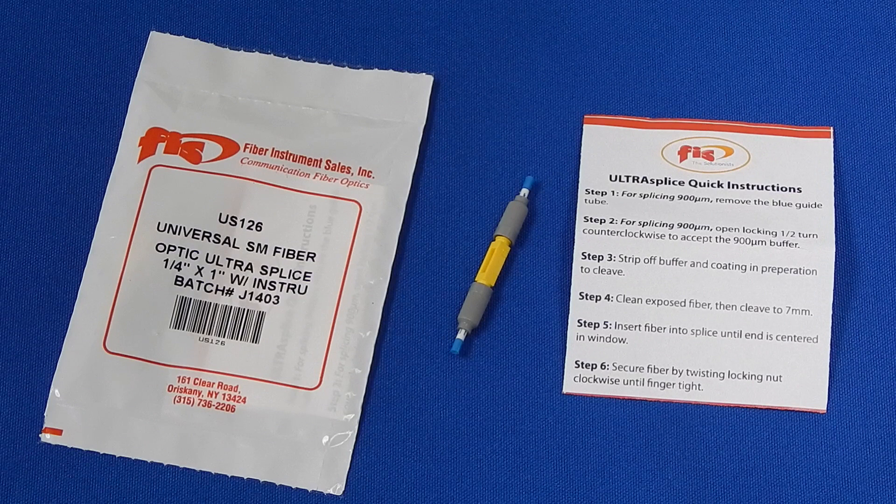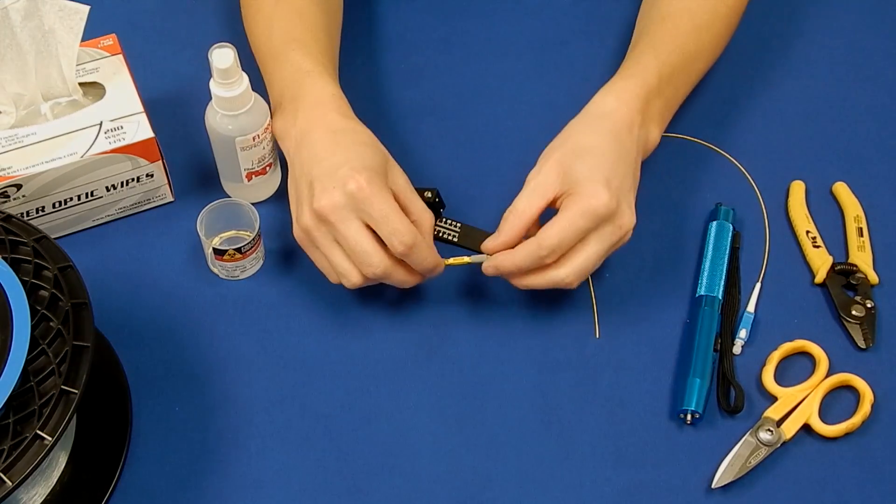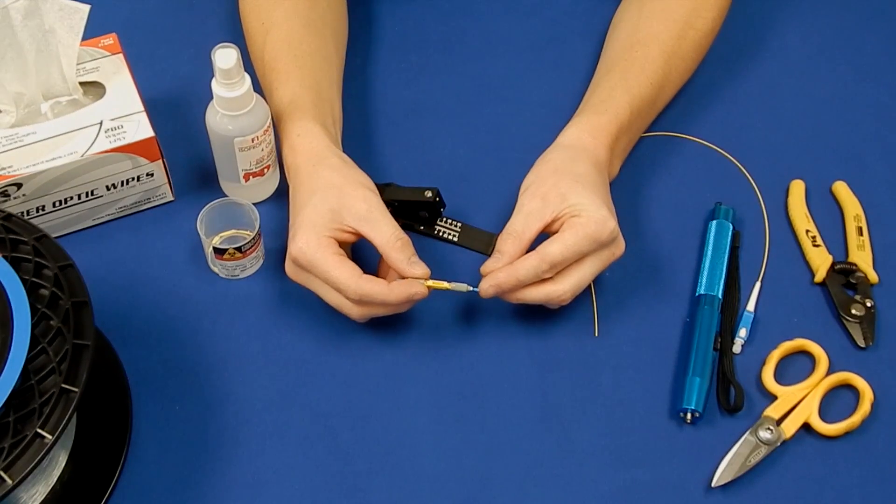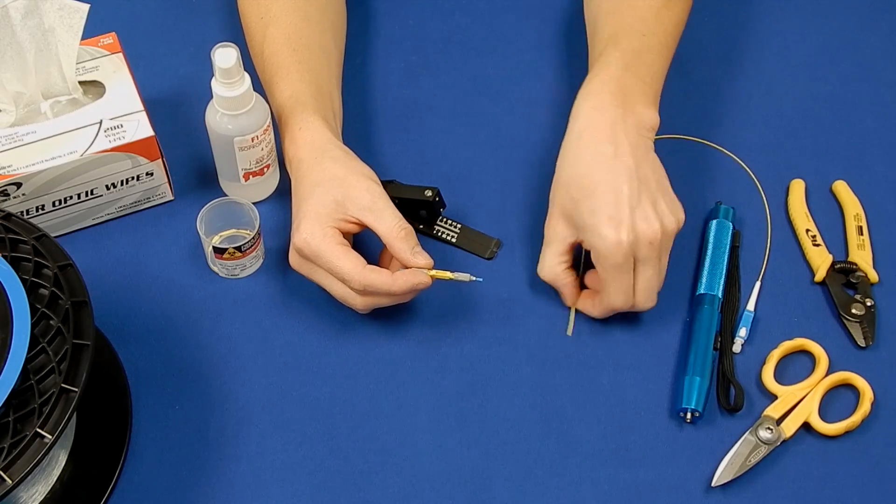The FIS UltraSplice is designed to accept both 250 micron and 900 micron fibers and uses a threaded cam to keep the fibers in place. For use with 900 micron fiber, remove the blue insert on the side the pigtail will be inserted.